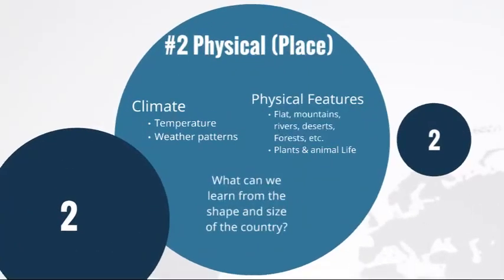The next theme is place. When we're considering place, we're looking at climate in terms of temperature and weather patterns, and the physical features of a place — for instance, its flat landscape, mountains, rivers, deserts, forests, and plants and animal life.